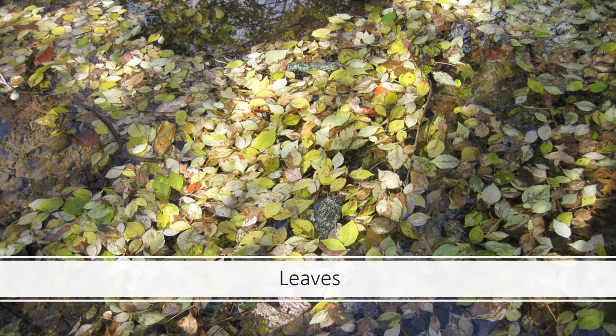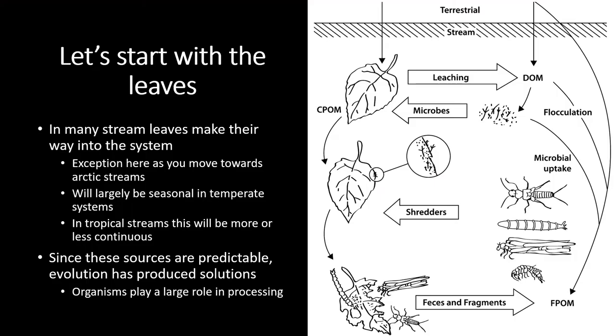Let's start with one of the most obvious and most serious contributors of allochthonous energy to streams, and that is leaves. You may think of leaves as an annoyance if you have to rake them up constantly, but think of the amount of biomass that falls every year from trees in and around streams — that's an enormous consequence for the total energy budget of streams. Leaves are one of the most important members of this allochthonous food source in streams.